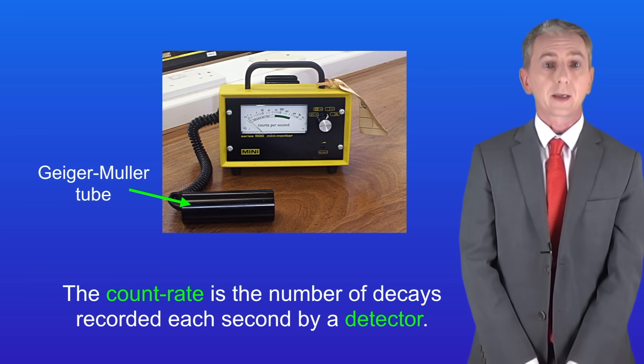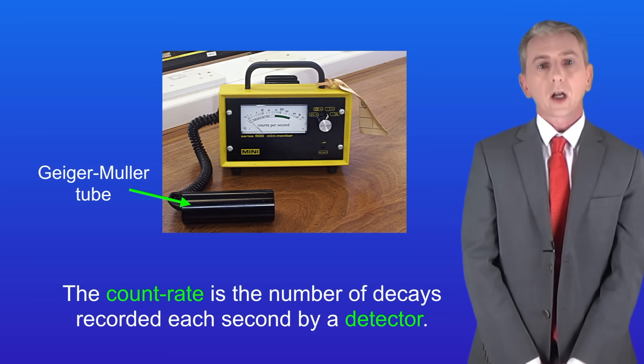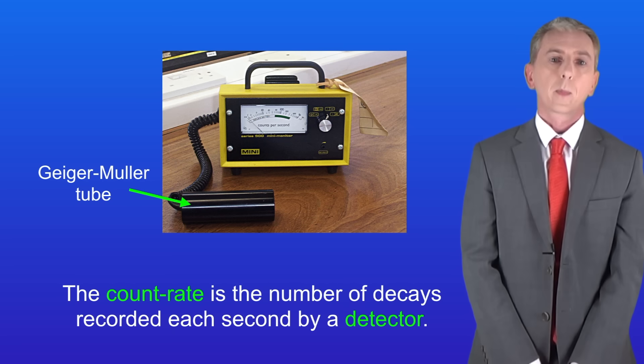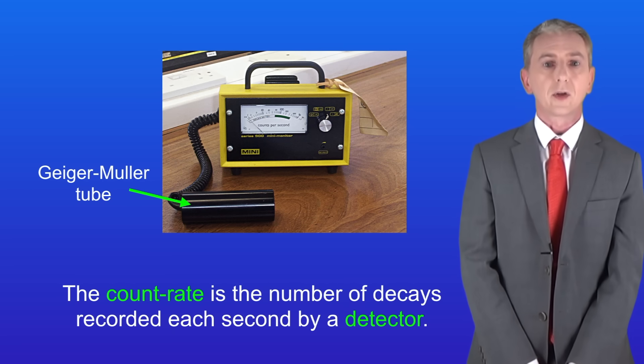Okay so we know that radioactive nuclei give out radiation so let's take a closer look now what this means. There are four different types of radiation which can be given out by an unstable nucleus.